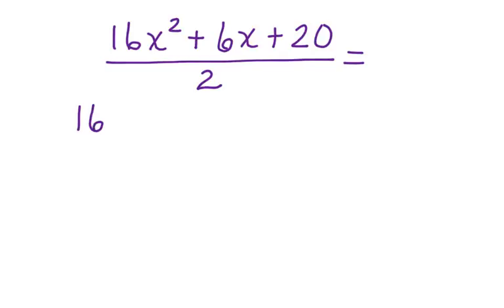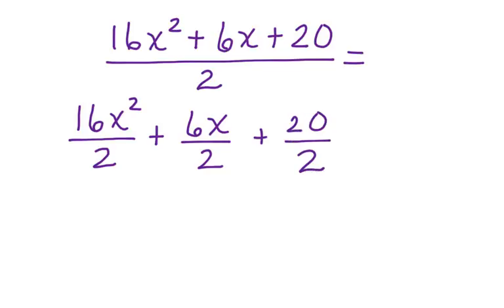And we're going to rewrite it as 16x squared divided by 2 plus 6x divided by 2 plus 20 divided by 2. If you notice, this 2 had to get distributed to each of these terms. And because of our fraction bar, we know that we're distributing it in division. Now we can simplify.